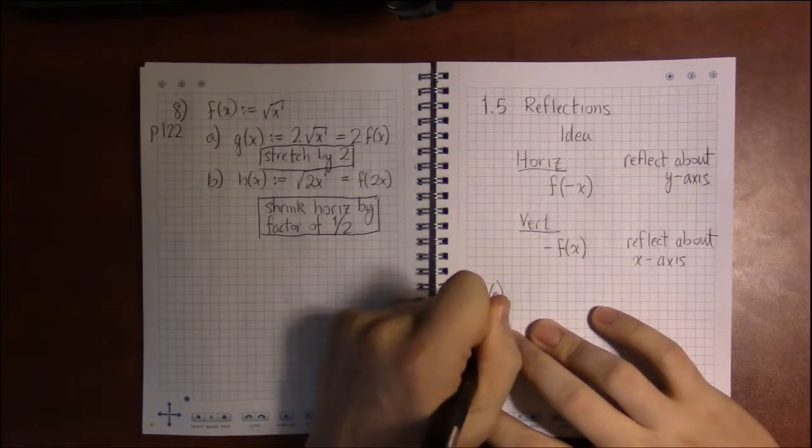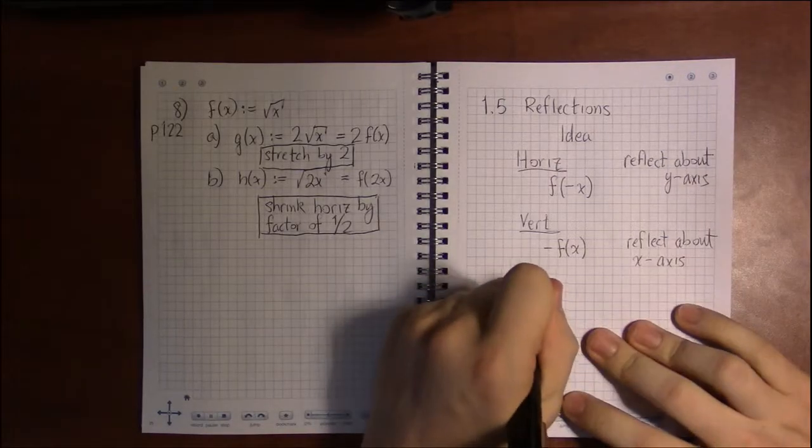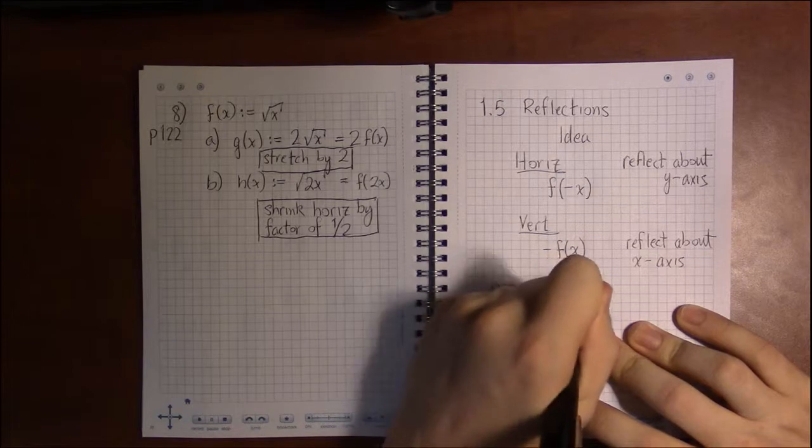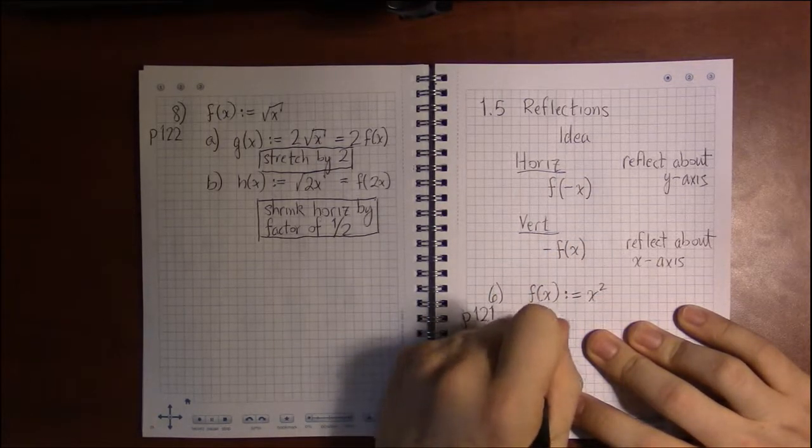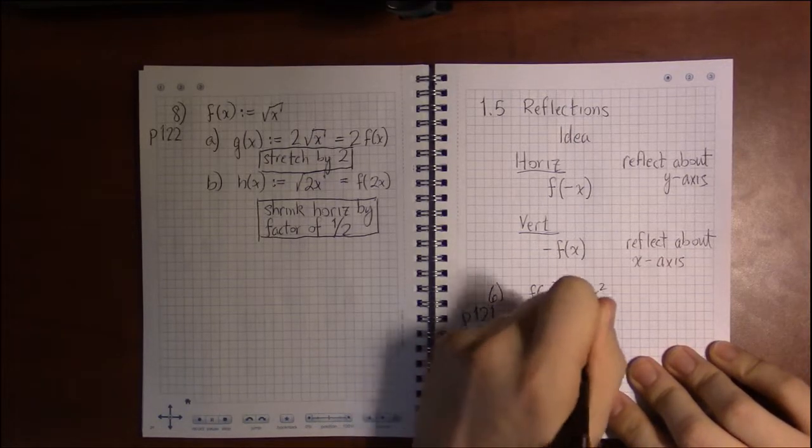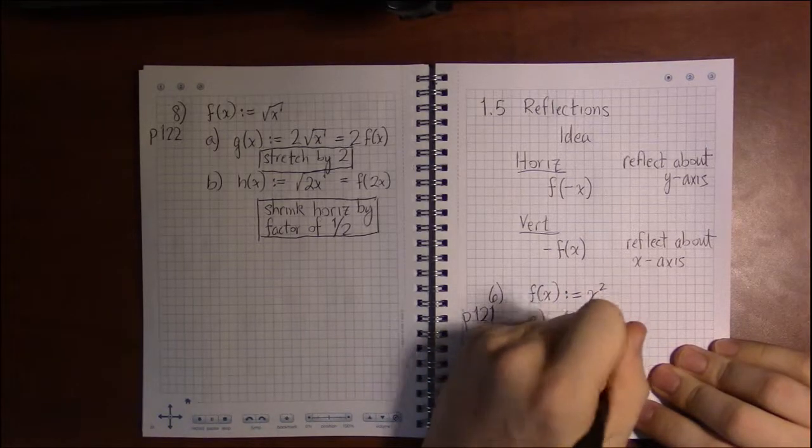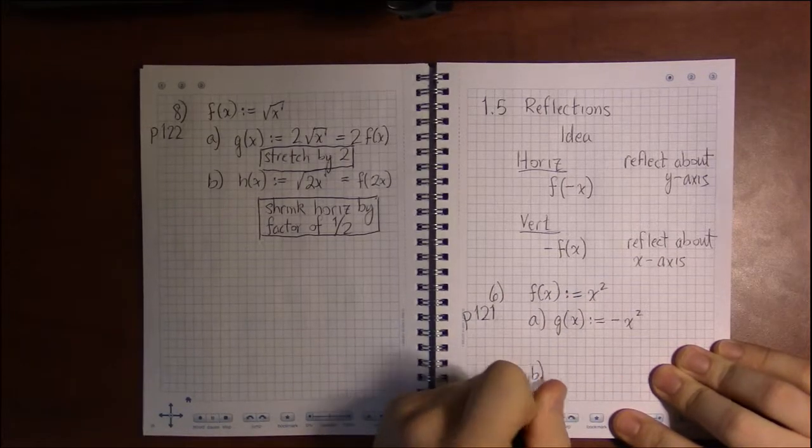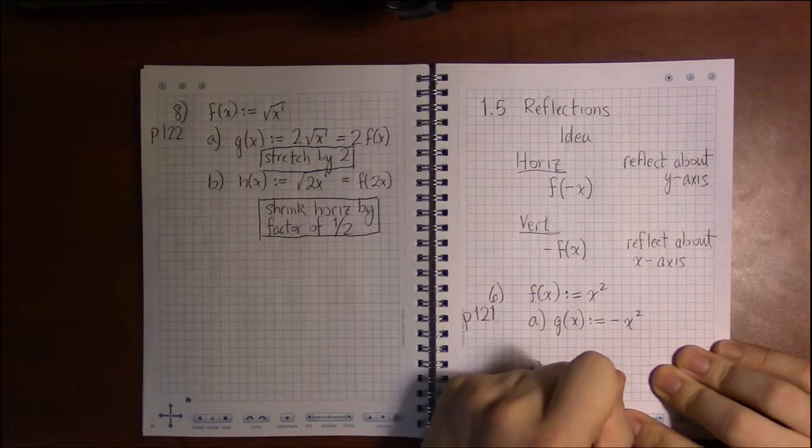The original function that we're looking at, the basic function that we're looking at, is x squared. And the two transformed versions of this are as follows: we have minus x squared for g, and for h we have...